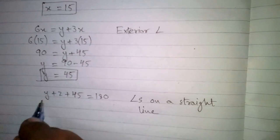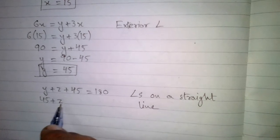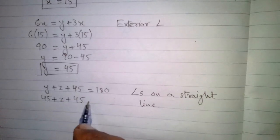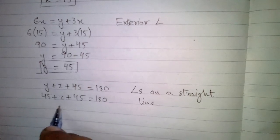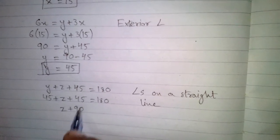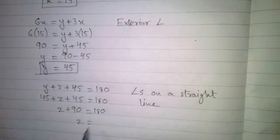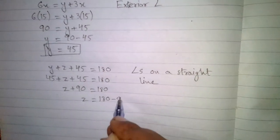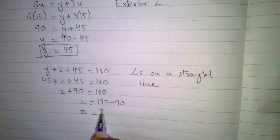Substituting Y equals 45, we get 45 plus 45 equals 90, so Z plus 90 is equal to 180. The value of Z is obtained by subtracting 90 from 180, so the value of Z is equal to 90.